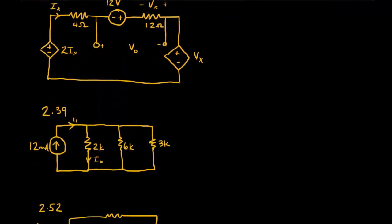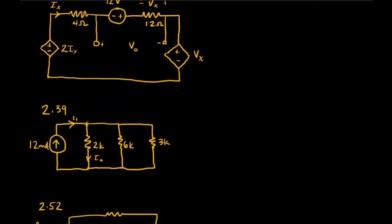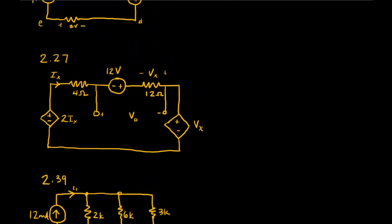Another loop. And here is something with a single node pair where I have a bunch of resistors in parallel. So I might end up having to use KCL for that problem.